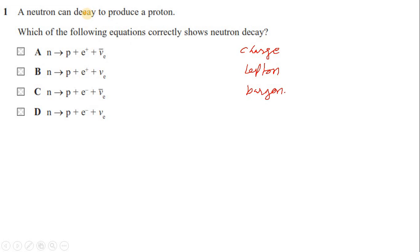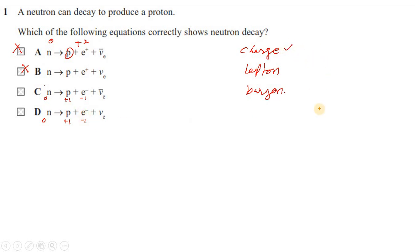We have a neutron decaying into a proton. We cannot have option A because total charge on the left is zero, but on the right we have +1 and +1, giving +2 — charge is not conserved. Similarly option B fails for the same reason. For options C and D, charge is conserved: zero equals +1 minus 1, so total charge is zero before and after.